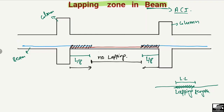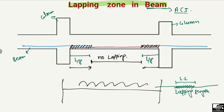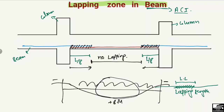Why? Because we have maximum bending moment at the mid portion of the beam. If I draw the bending moment diagram, when a load acts on this beam it will show a deflection and bending moment where we have negative bending moment at the supports and positive bending moment at mid-span. The maximum positive bending moment is at the mid portion, so no overlapping is allowed there because of the maximum bending stresses.